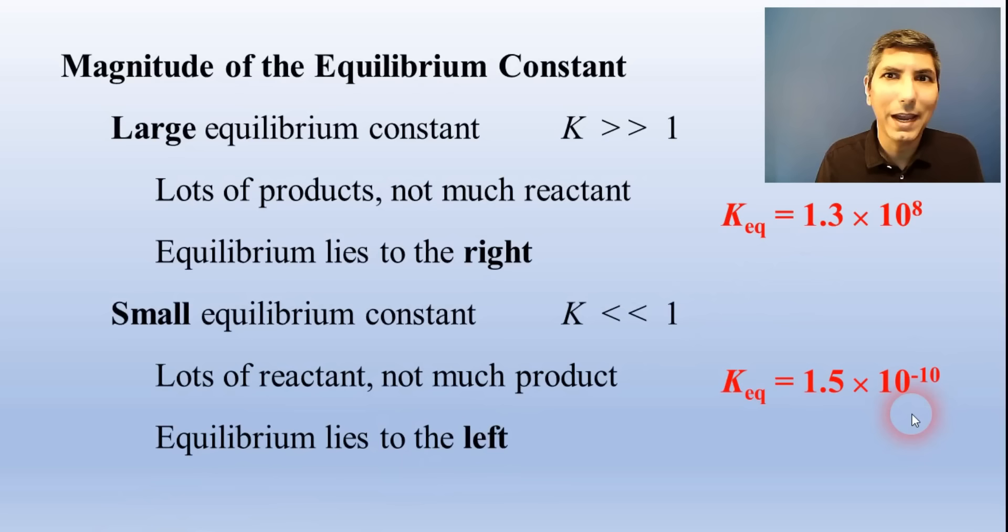A very small equilibrium constant, like in this example, tells us that almost 0% of the reactants convert into products. So we say equilibrium lies to the left, or that it favors the reactants. The larger the equilibrium constant, the greater the ratio of products to reactants you'll generally have.